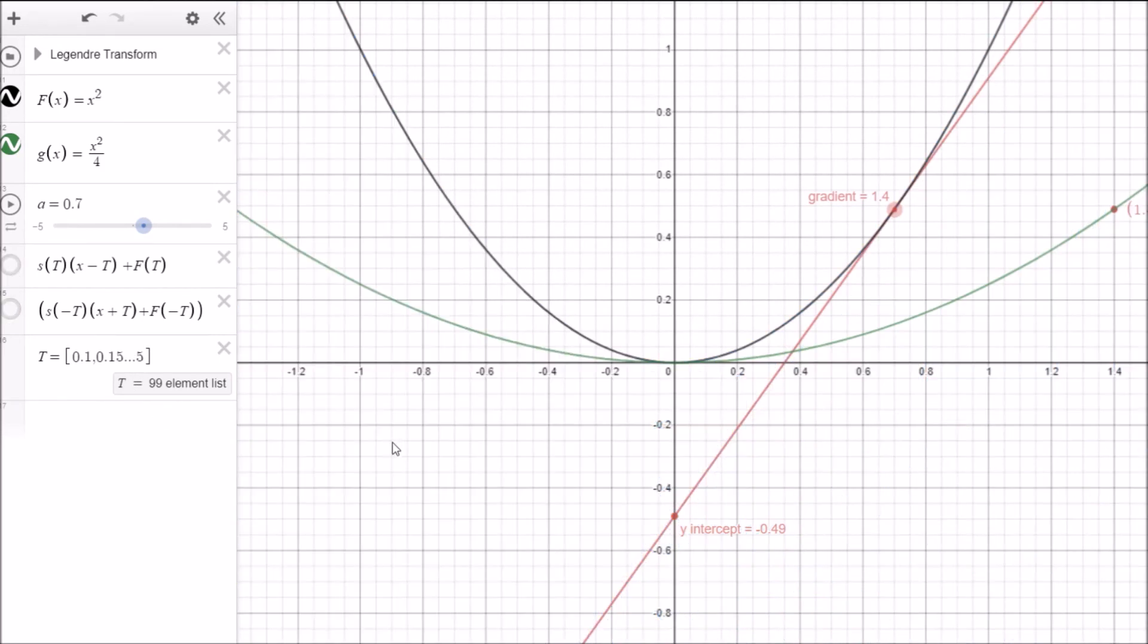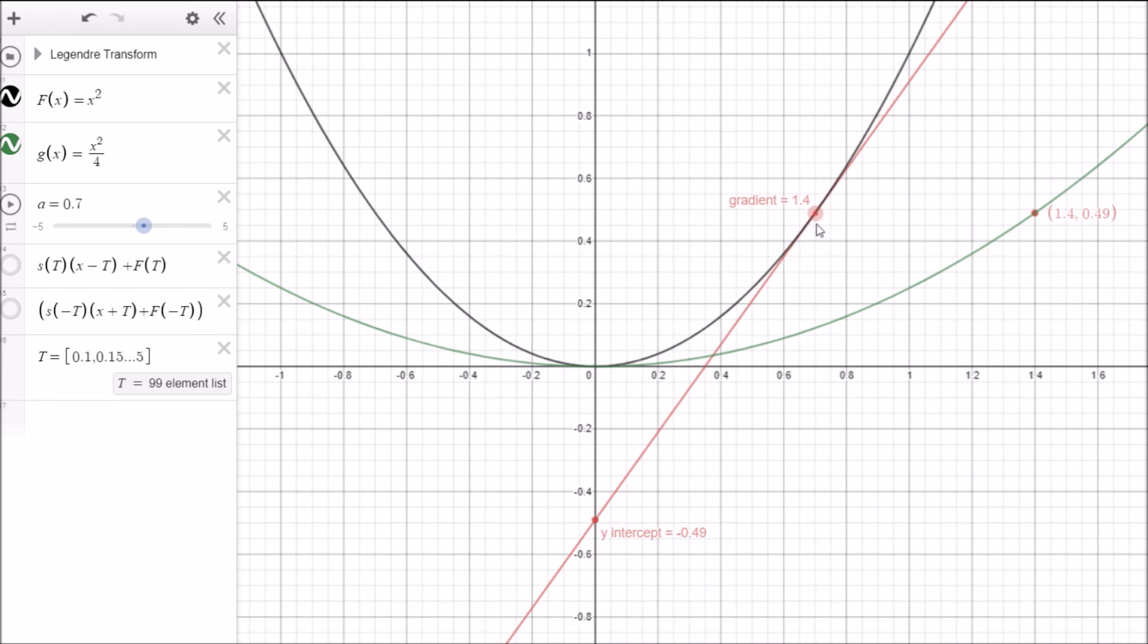So that gives us a good graphical indication of what we're doing whenever we are generating a Legendre transform. And the secret is really in just this little diagram here where we can adjust the position of each point on the original curve. So if we take a note of the gradient, the gradient becomes our new x-axis and the intercept here becomes our y-value.